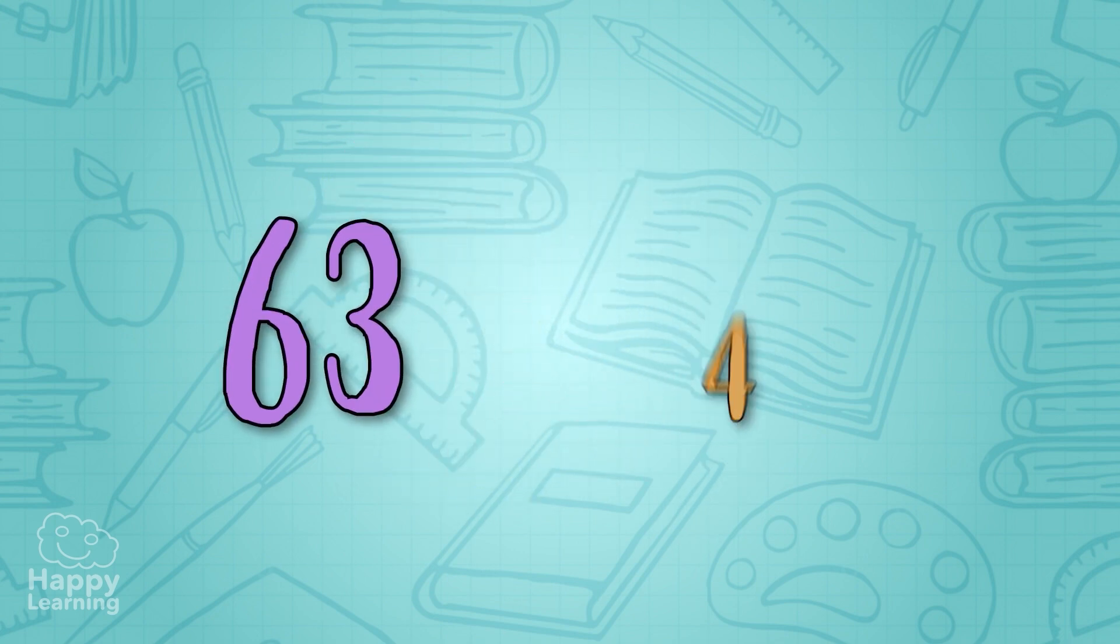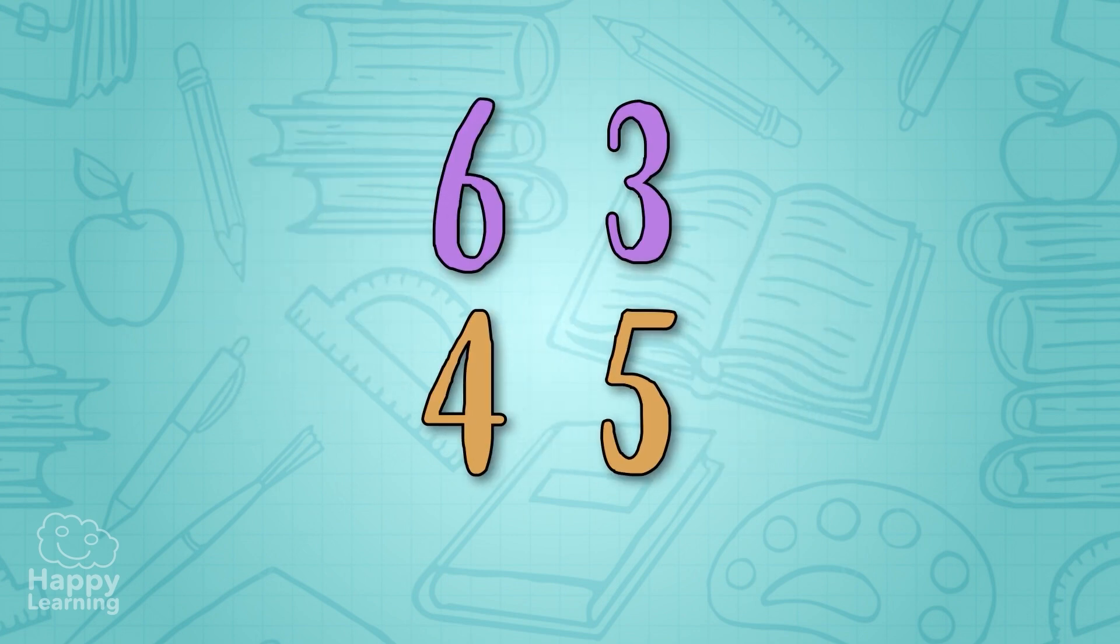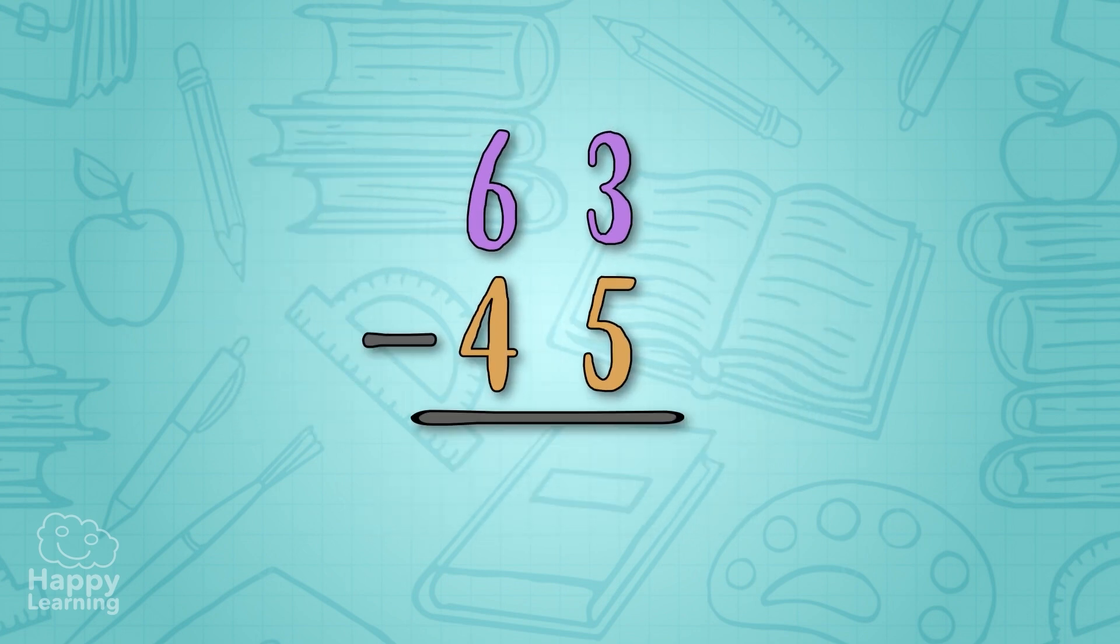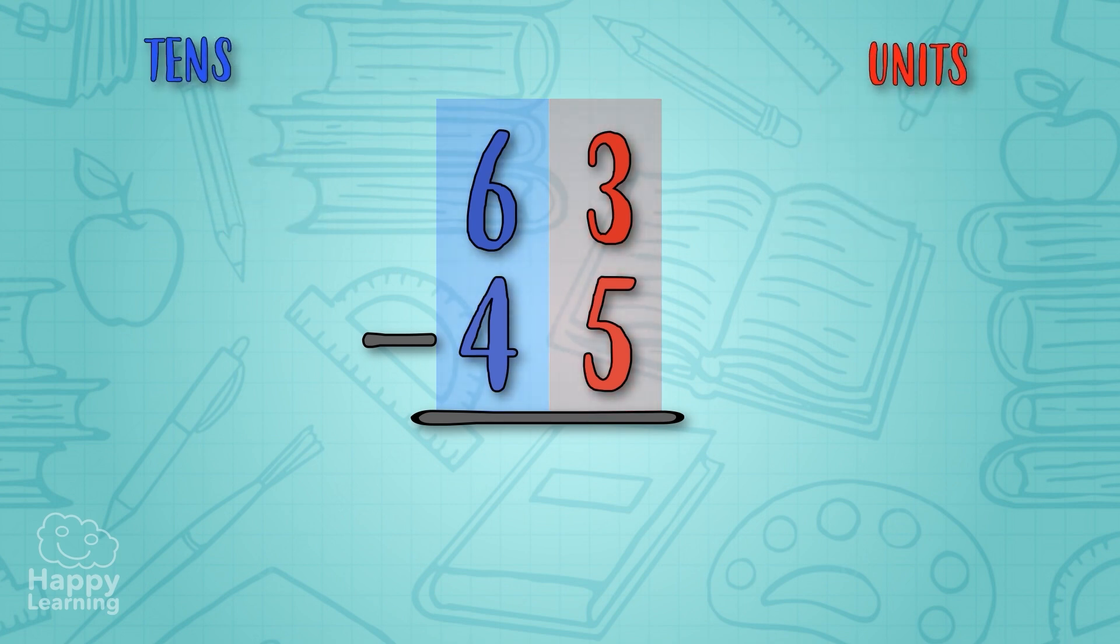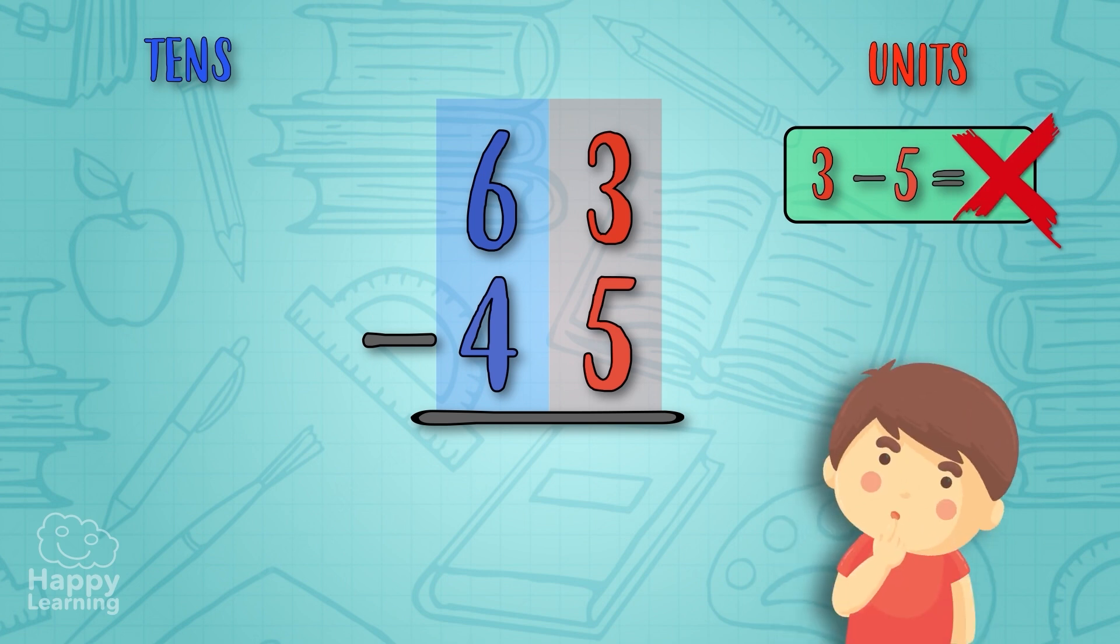We're going to subtract 63 minus 45. First, as always, we subtract the units. 3 units minus 5 is—whoops, it's impossible to subtract 3 minus 5. So what do we do?